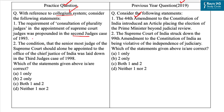The first statement is incorrect. In the Third Judges Case, the court opined that the consultation process to be adopted by the Chief Justice of India requires consultation of plurality — meaning the sole opinion of the Chief Justice does not constitute the consultation process. He should consult a collegium of four senior judges of the Supreme Court, and even if two judges give an adverse opinion, he should not send the recommendation to the government. The court held that recommendations made without complying with the consultation process norms are not binding on the government.